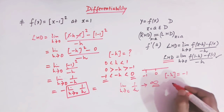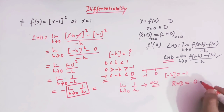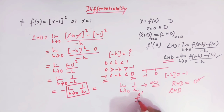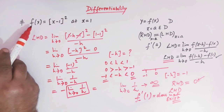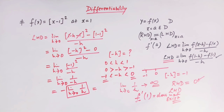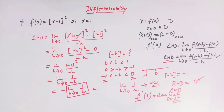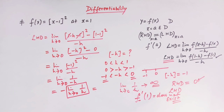We arrive at the conclusion: the right hand derivative equals 0, which is finite and exists. But the left hand derivative does not exist at x = 1. Since these two are not equal (one doesn't even exist), the derivative of this function at x = 1 does not exist. This is how we prove that the function is not differentiable at x = 1.